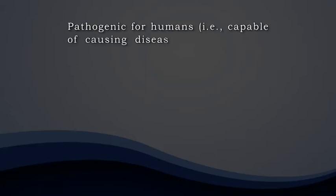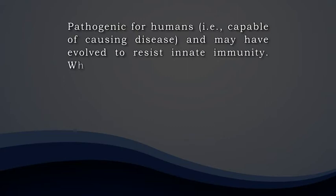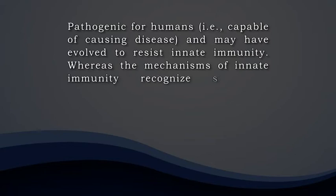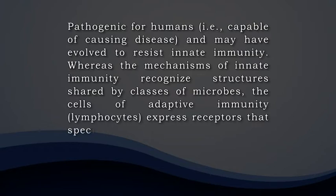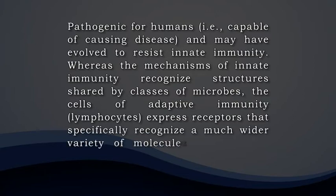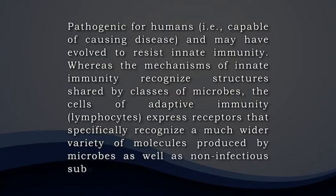Adaptive immune responses are especially important for defense against infectious microbes that are pathogenic for humans, that is, capable of causing disease, and may have evolved to resist innate immunity. Whereas the mechanisms of innate immunity recognize structures shared by classes of microbes, the cells of adaptive immunity, that is lymphocytes, express receptors that specifically recognize a much wider variety of molecules produced by microbes as well as non-infectious substances. Any substance that is specifically recognized by lymphocytes or antibodies is called an antigen. Adaptive immune responses often use the cells and molecules of the innate immune system to eliminate microbes, and adaptive immunity functions to greatly enhance these antimicrobial mechanisms of innate immunity.